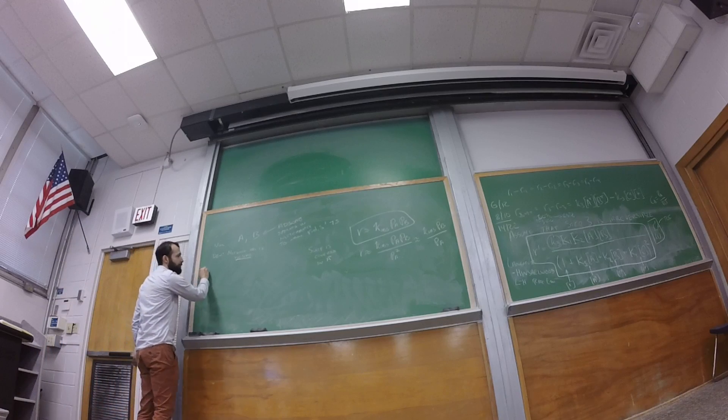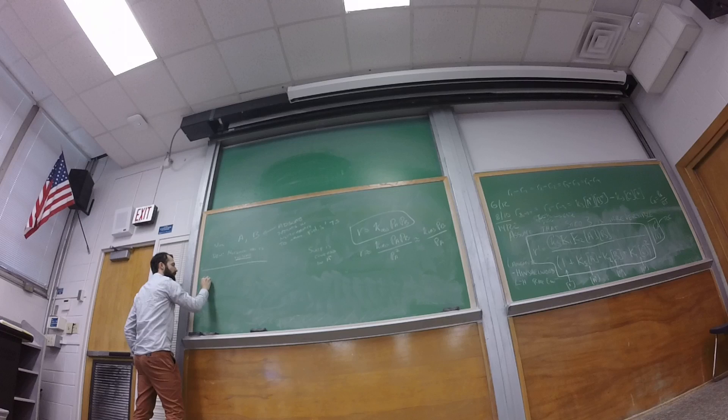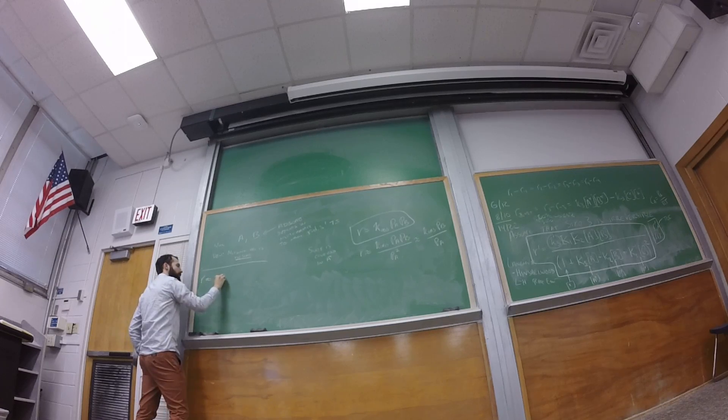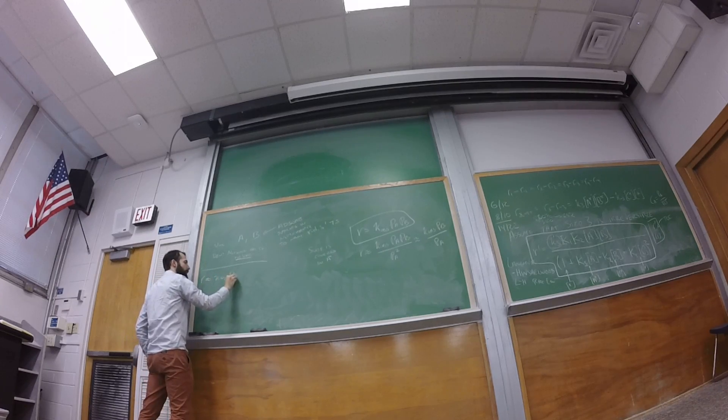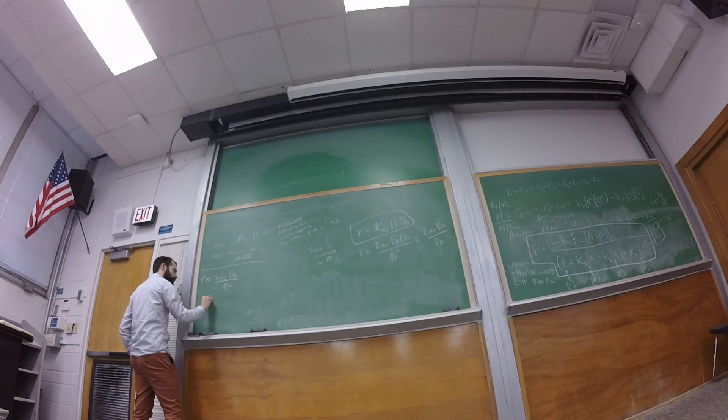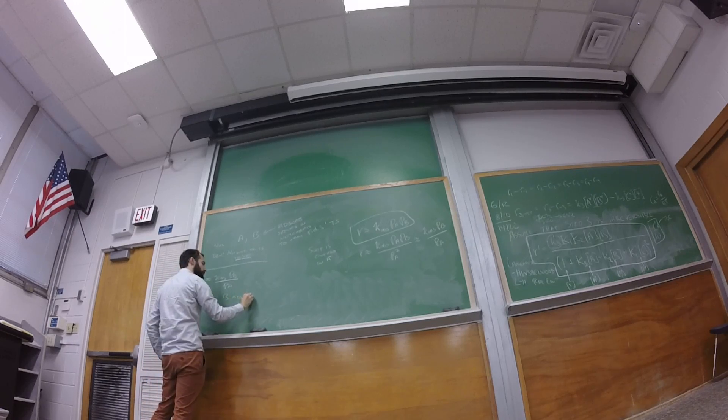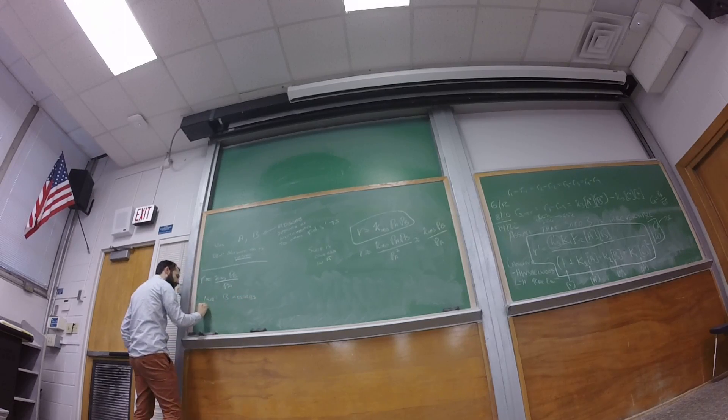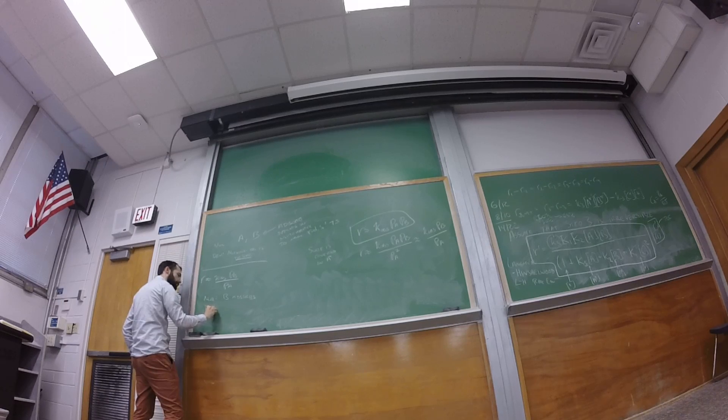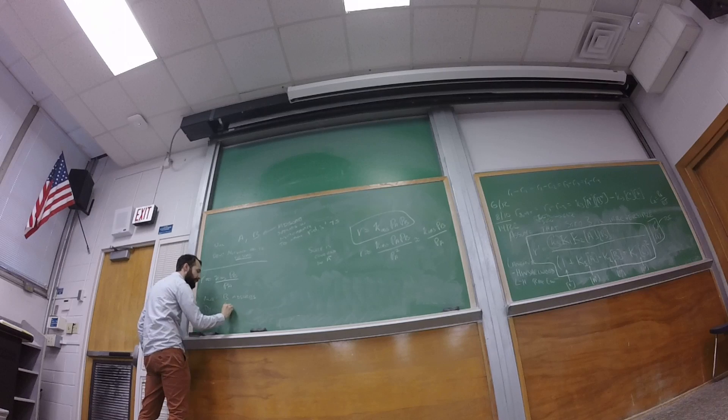Now let's take this other example where we had R, K observed, pressure of B divided now by the pressure of A. So what's in the numerator? B. So B adsorbs to make the transition state. And what's in the denominator? A. A. So A has to desorb.